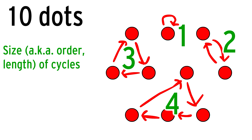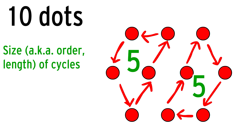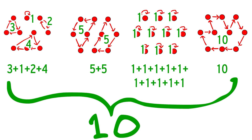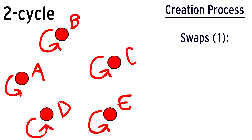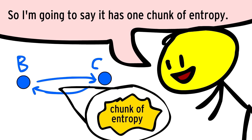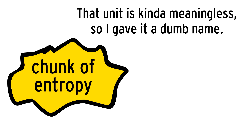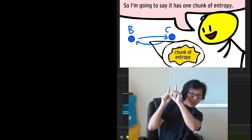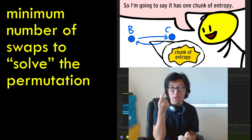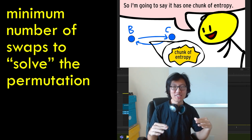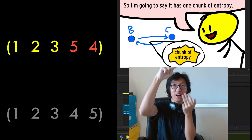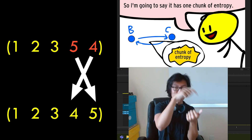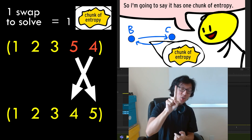Imagine this set of dots. Let's write the size, or order, of each cycle. No matter what cycles we draw on these dots, the sum of the cycle sizes will always remain the same — the total number of dots in the set. Imagine starting from the solved state: every element is in a one-cycle. A two-cycle can be created with one swap, so I'm going to say it has one chunk of entropy. A chunk of entropy is the minimum number of swaps you'd need to return a permutation to the solved state. So if you had the permutation 1, 2, 3, 5, 4, it would take one swap of the five and four to solve it. That permutation has one chunk of entropy.